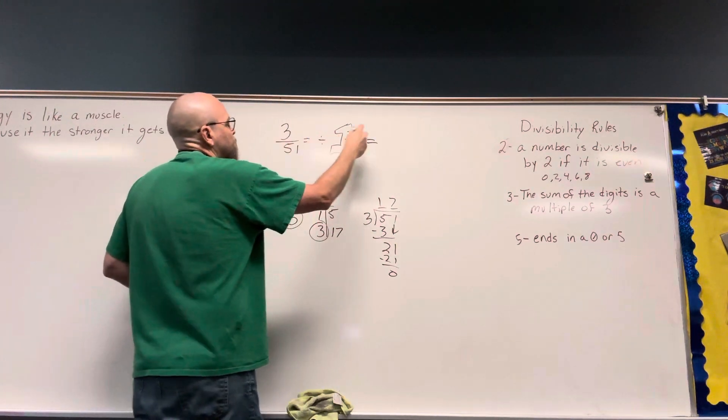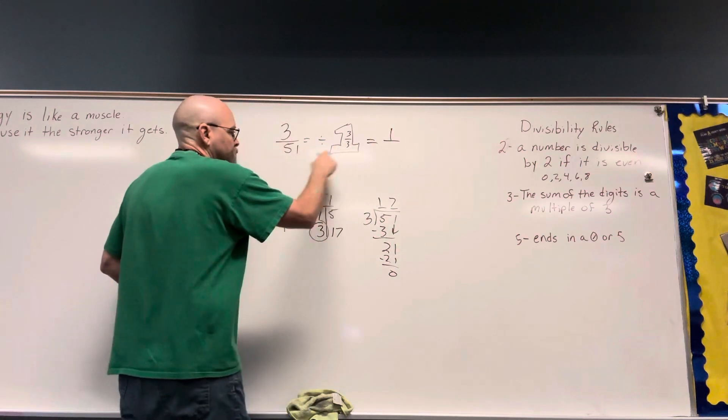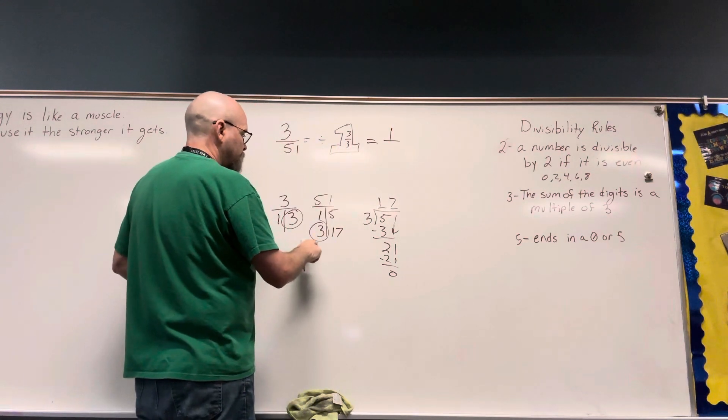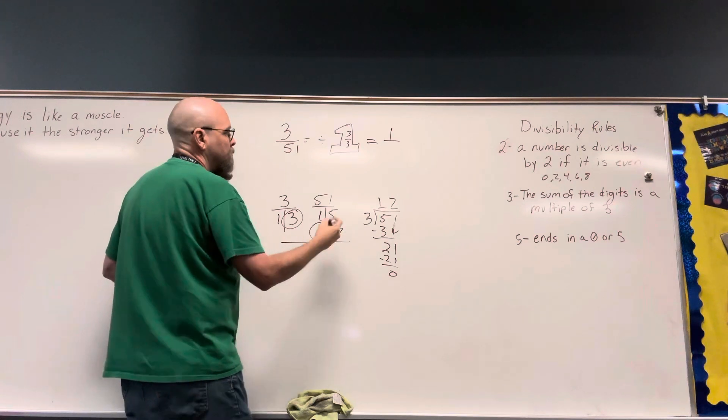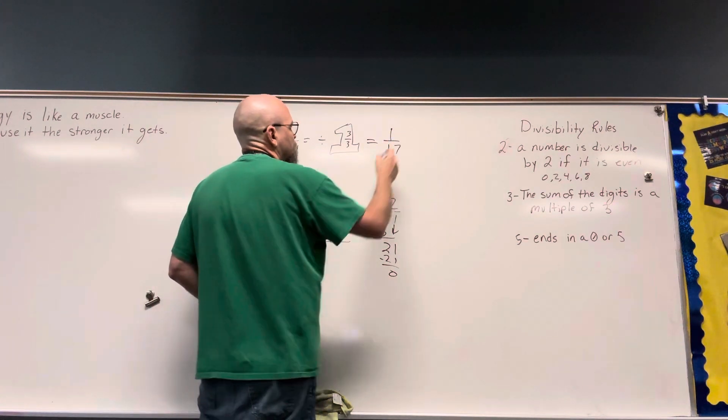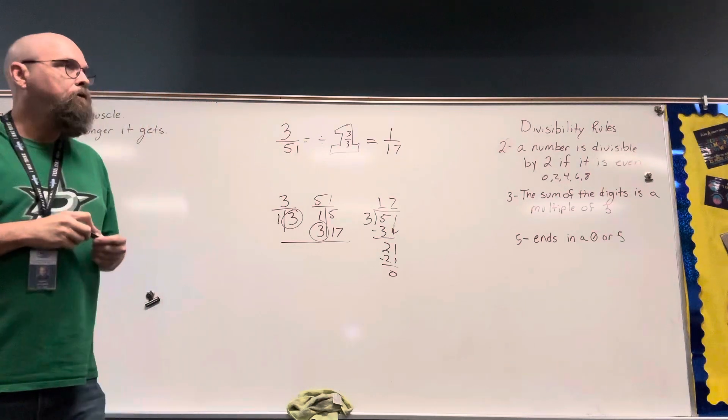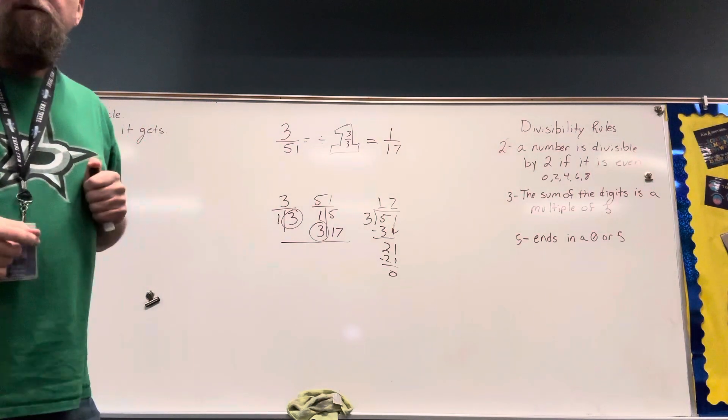So 3 divided by 3 is 1, 51 divided by 3 is 17. I can go down here. If I do this, it helps me with my division. And any fraction that has a 1 as a numerator is in simplest form already.